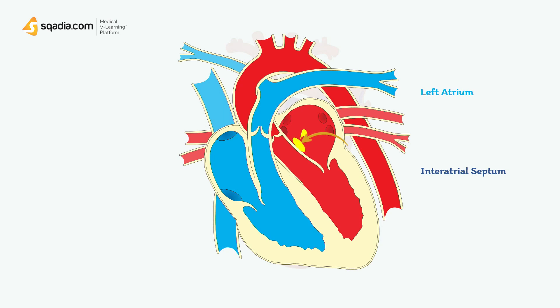As mentioned earlier, they are attached to the atrial septum, and around 10% of myxomas are inherited and known as familial myxomas.